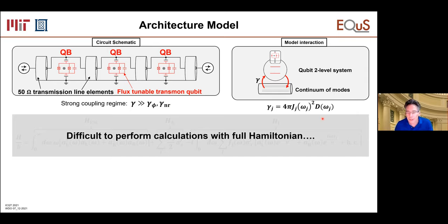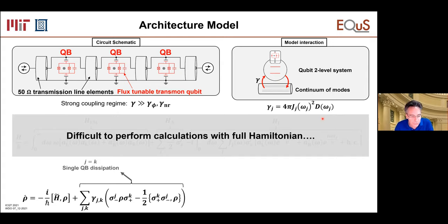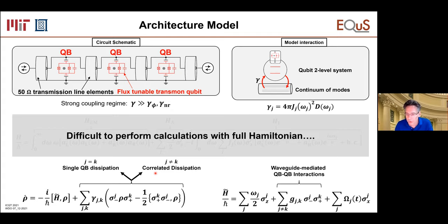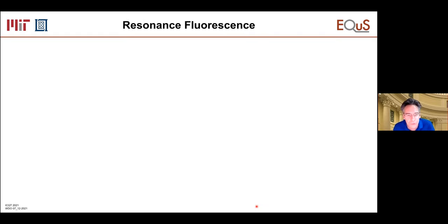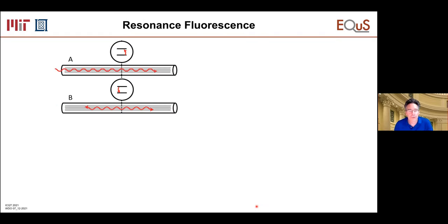Simulating this system with the full Hamiltonian is quite difficult because of the continuum of modes, so we use a master equation — the standard approach. We include both single-qubit dissipation and correlated dissipation between two or more qubits that quantum mechanically interfere with one another. The effective Hamiltonian includes waveguide-mediated qubit-qubit interactions with strength g related to the decay rate gamma, a classical driving term, and the qubits themselves.